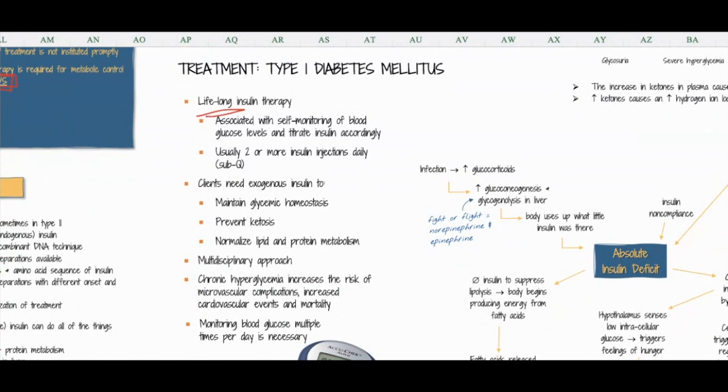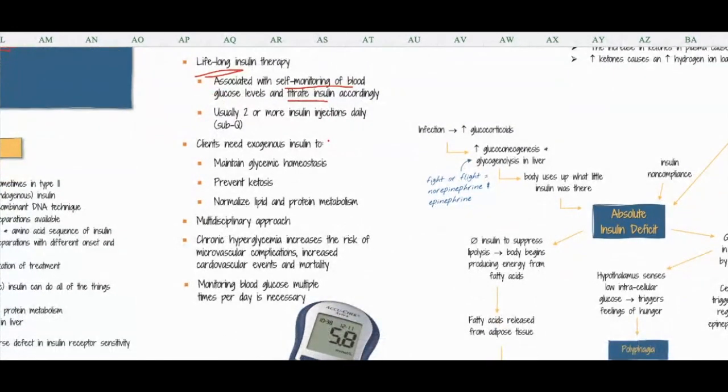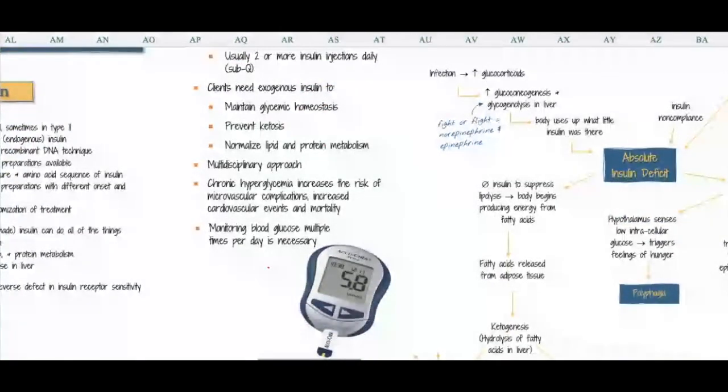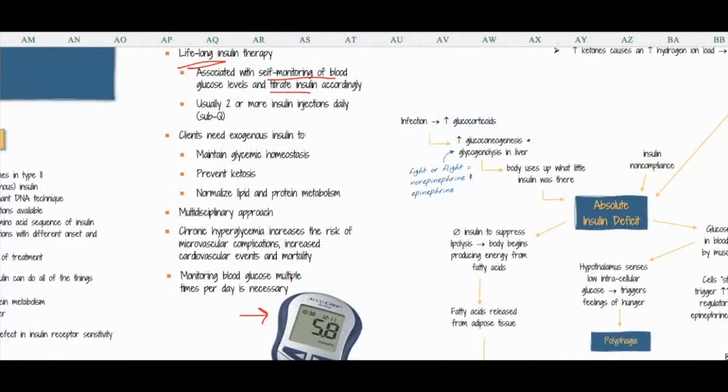So lifelong insulin therapy requires self-monitoring blood glucose levels and then titrating insulin accordingly. You guys have probably done this in your clinicals where, at a lot of hospitals you can't do it as students, but your preceptor would go and take their capillary blood glucose using this little doohickey down here. Depending on what that is, you probably have a sliding scale that tells you how much insulin you should give or shouldn't give.